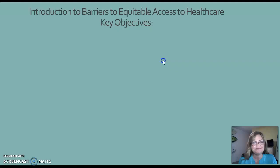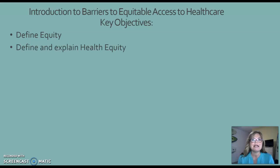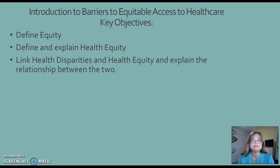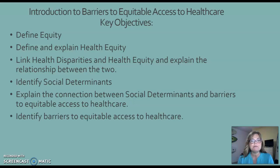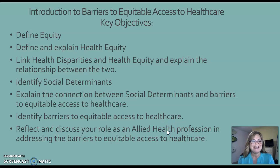The key objectives for this lecture today are: define equity; define and explain health equity; link health disparities and health equity and explain the relationship between the two; identify social determinants; explain the connection between social determinants and barriers to equitable access to care; identify the barriers to equitable access to care; and reflect and discuss your role as an allied health professional in addressing these barriers.